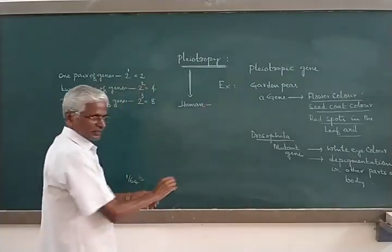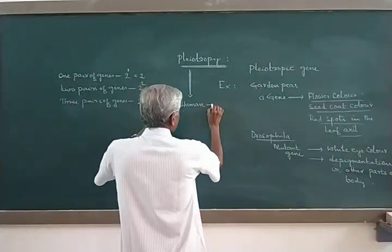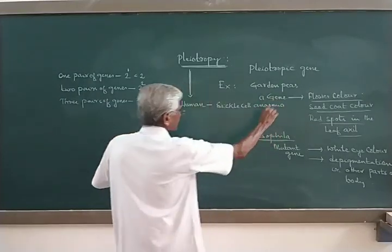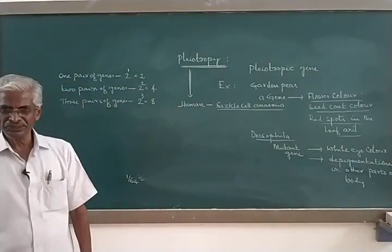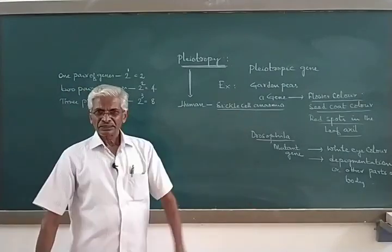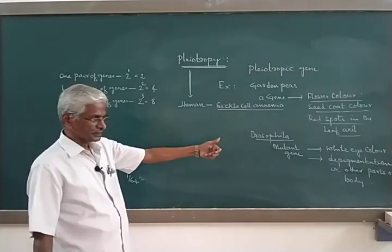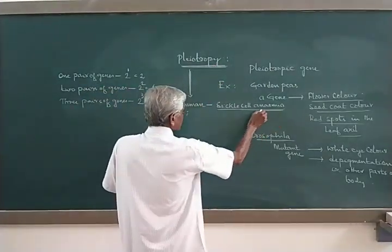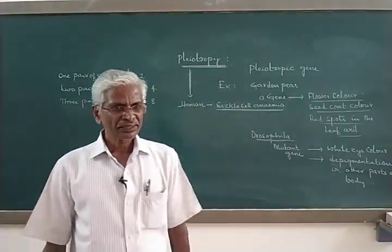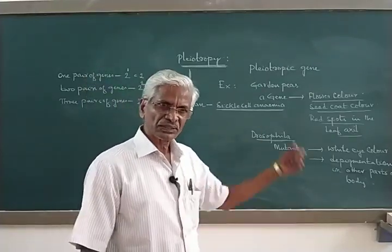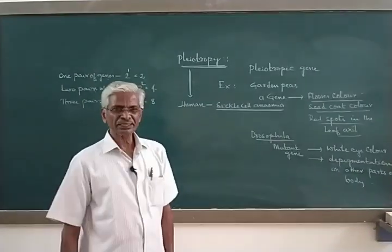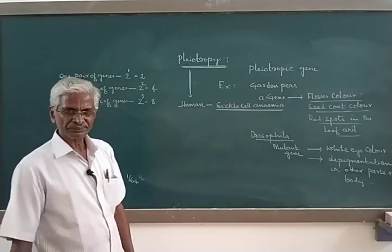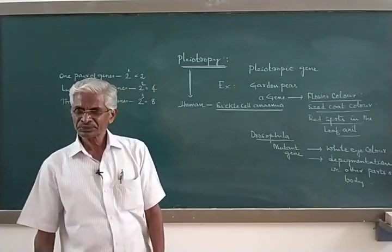Pleiotropy is exactly the converse of polygenic inheritance. In polygenic inheritance, one character is controlled by many genes. In pleiotropy, one gene controls many traits or characters. A famous example of pleiotropy in humans is the hereditary disease sickle cell anemia, which will be studied in more detail in a later chapter.